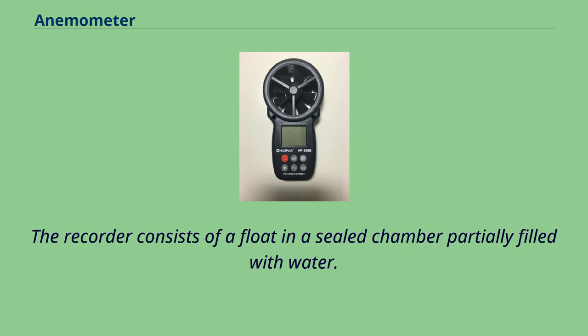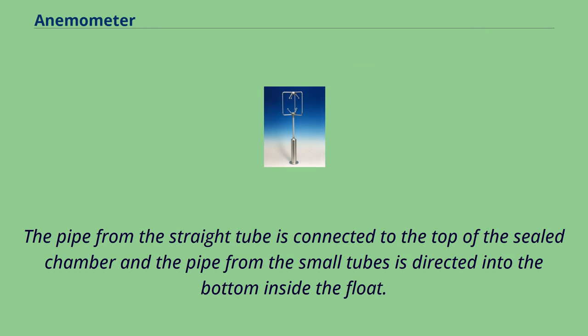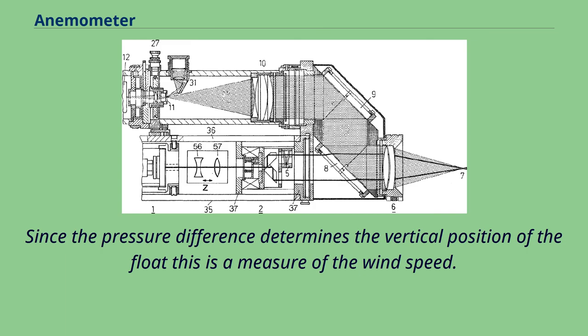The recorder consists of a float and a sealed chamber partially filled with water. The pipe from the straight tube is connected to the top of the sealed chamber and the pipe from the small tubes is directed into the bottom inside the float. Since the pressure difference determines the vertical position of the float this is a measure of the wind speed.